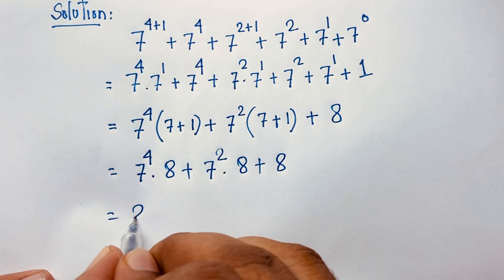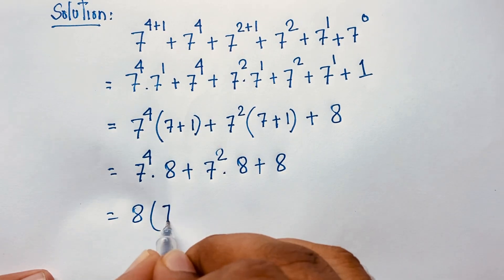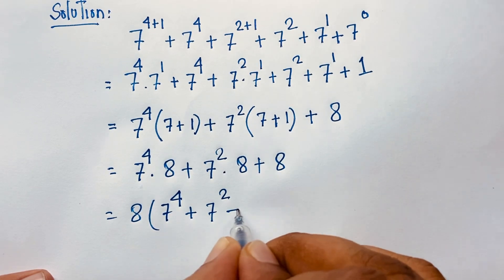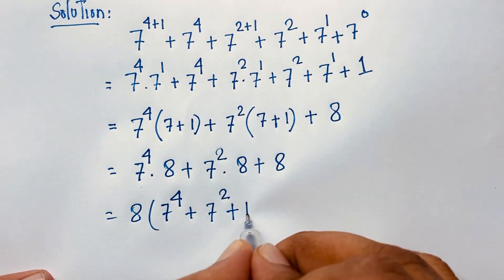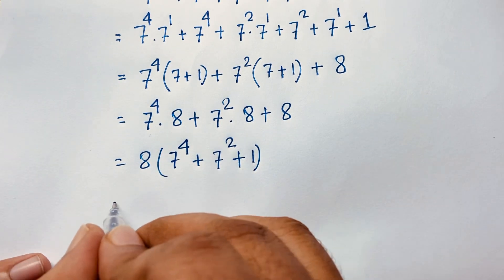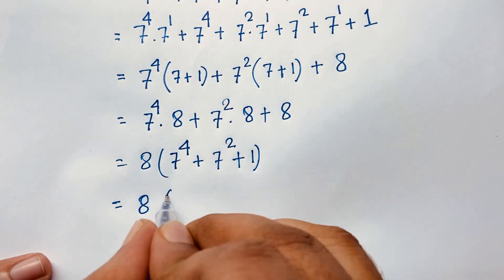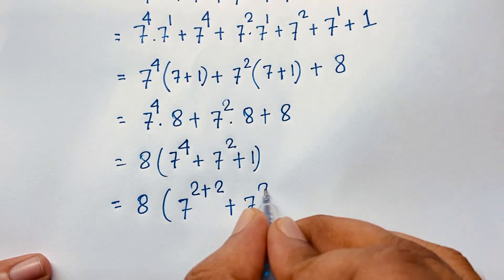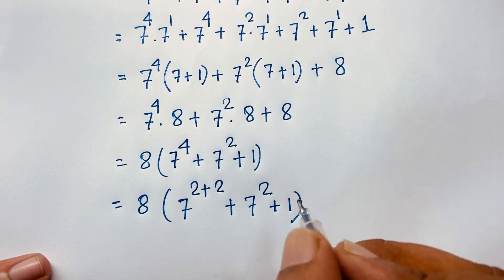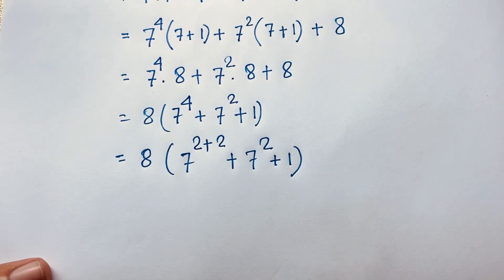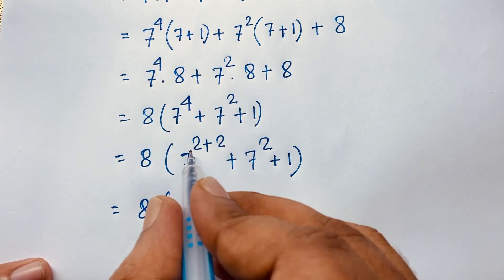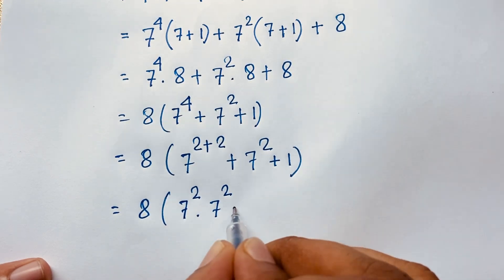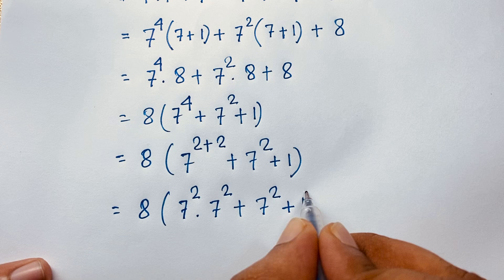Now 8 is common throughout. Factoring out 8: dividing gives 7 to the power 4, dividing the second term gives 7 to the power 2, and dividing 8 by 8 gives 1. So we have 8 times (7 to the power 4 plus 7 to the power 2 plus 1). Inside the bracket: 7 to the power 2 times 7 to the power 2, plus 7 to the power 2, plus 1.